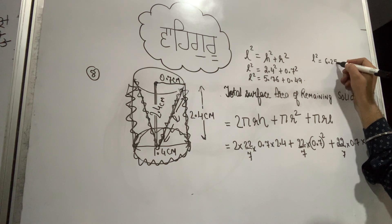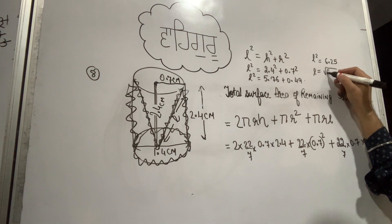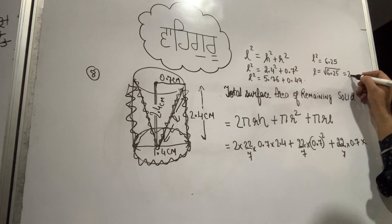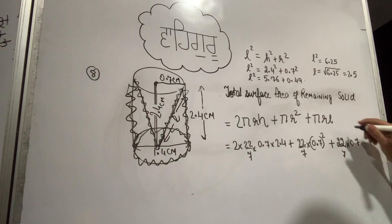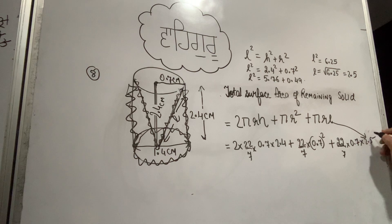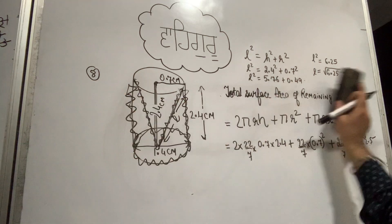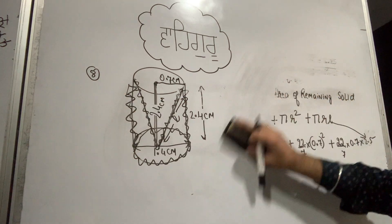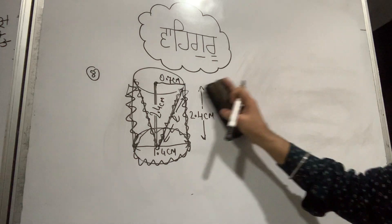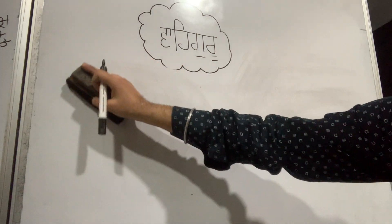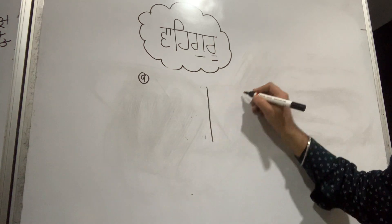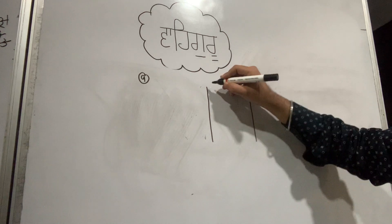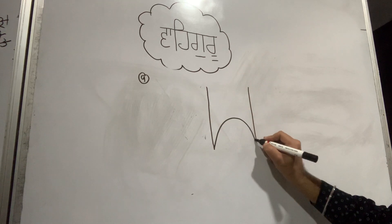L squared equals 5.76 plus 0.49, which equals 6.25. Taking the square root, L equals 2.5. So the slant height is 2.5 cm. Now we substitute this value into the formula to calculate the answer.